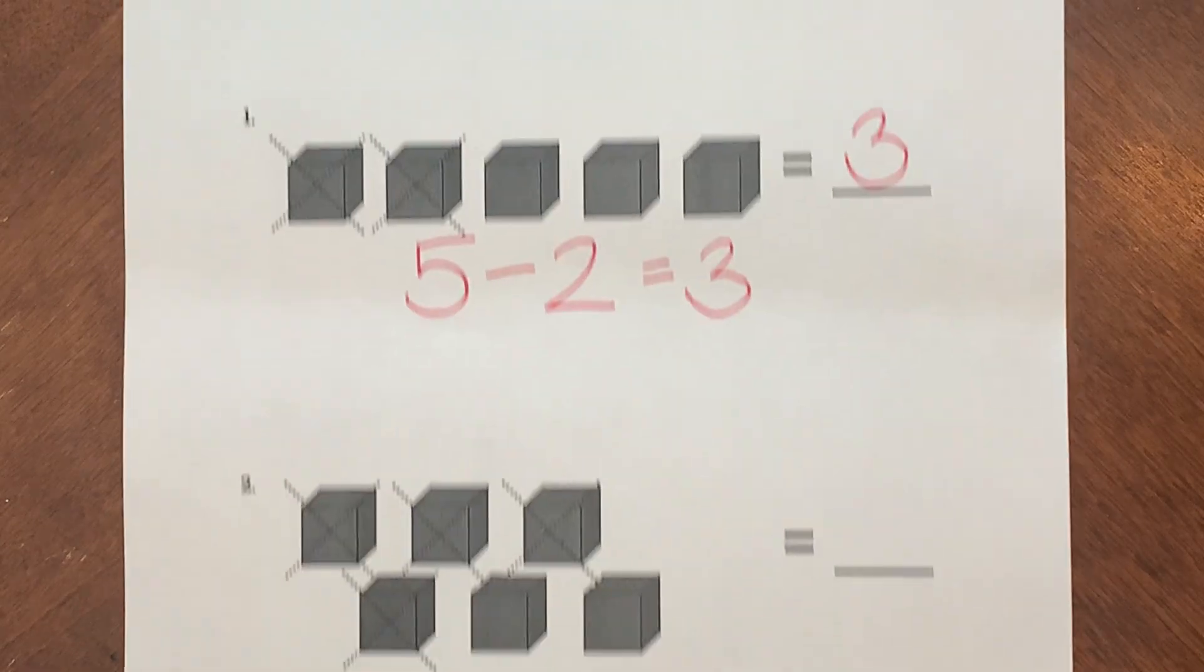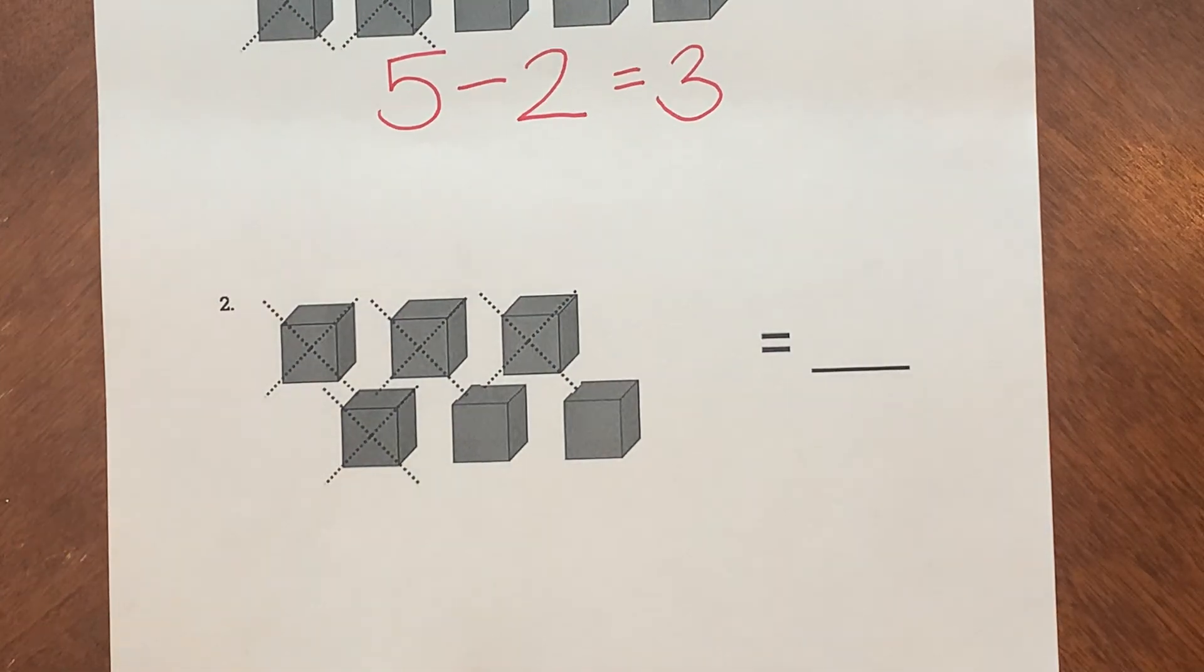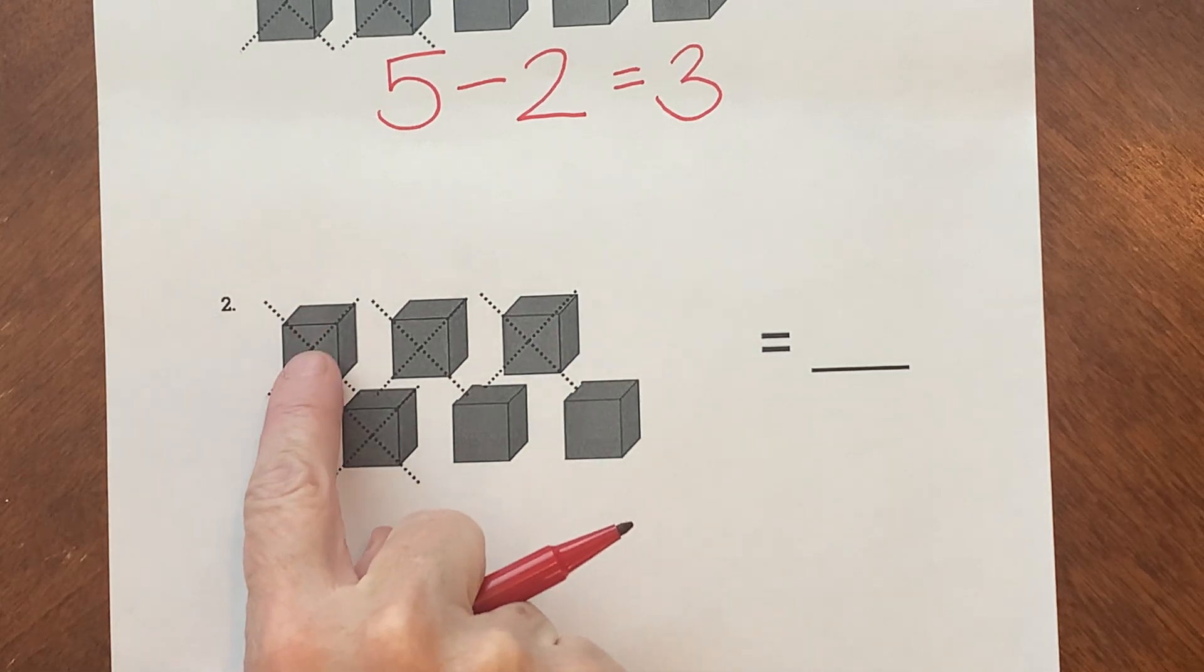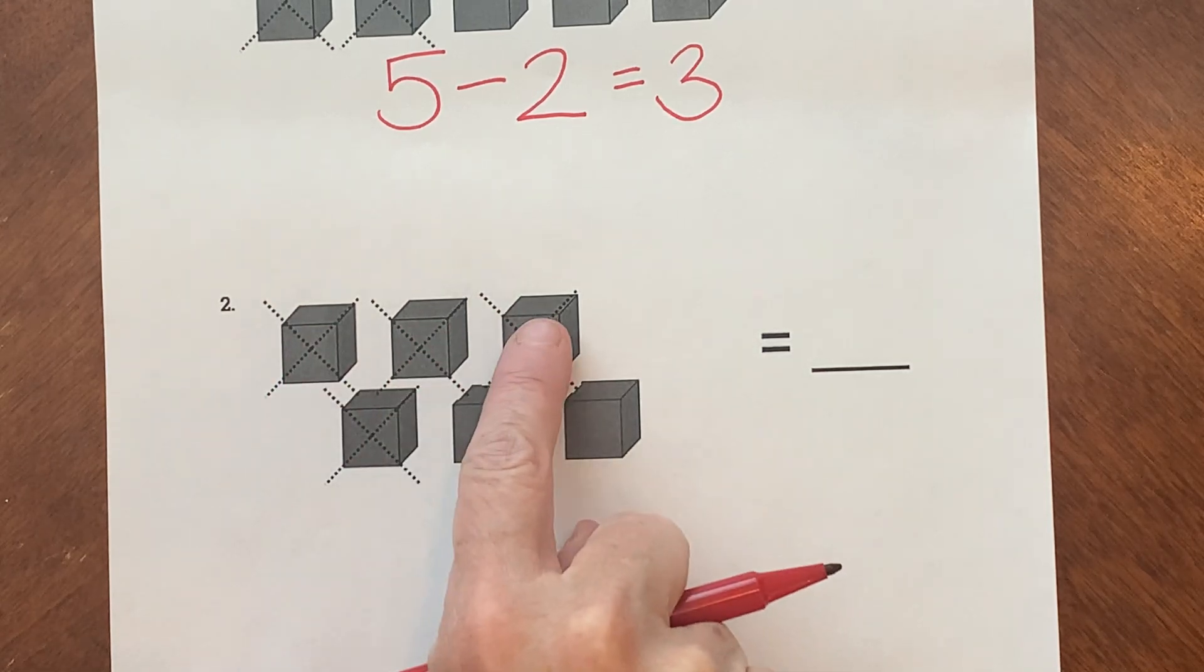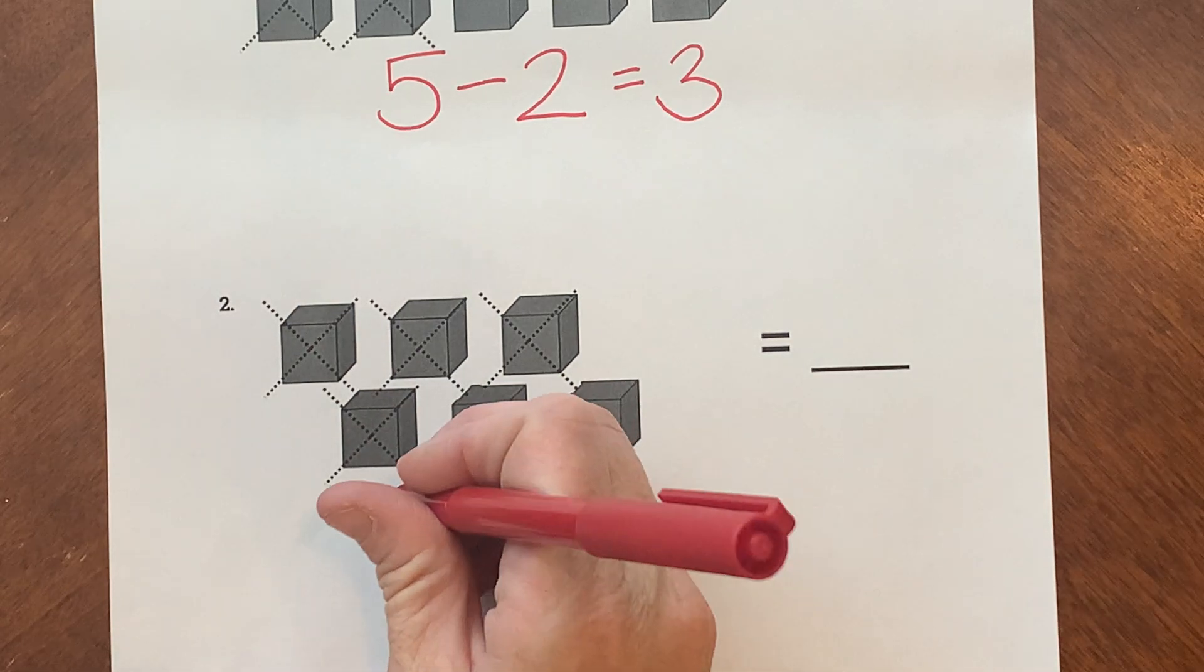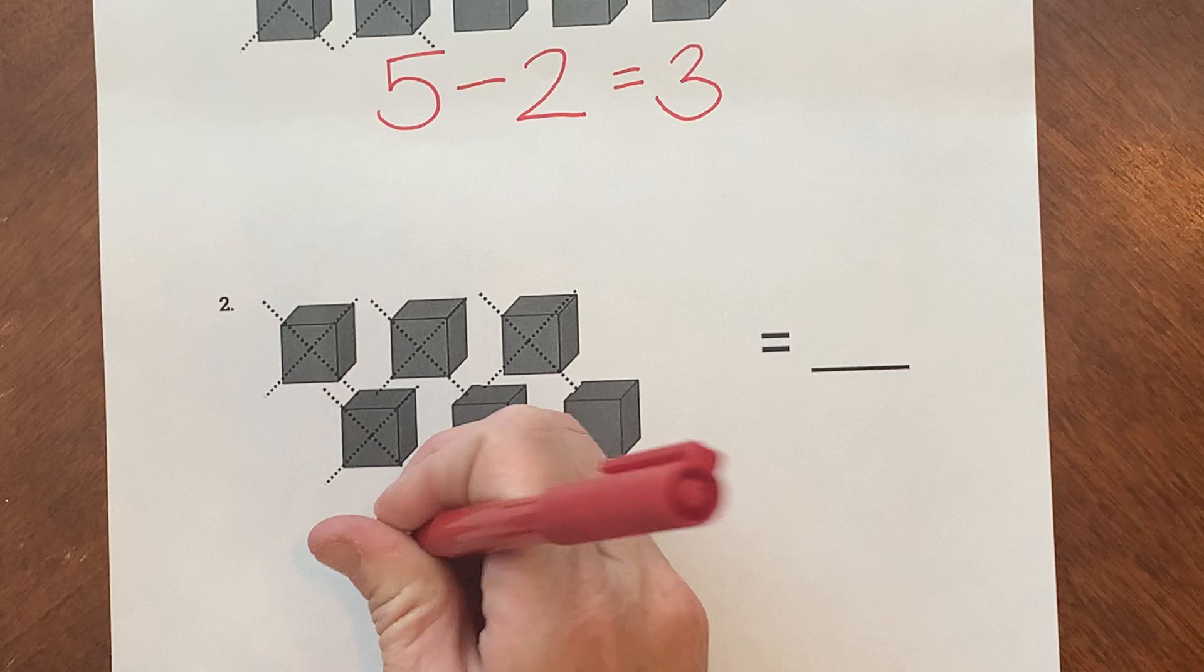Okay, here's my next one. It shows blocks again. So let's count how many blocks we had to start with. 1, 2, 3, 4, 5, 6. Okay, how many blocks do we have? Six blocks.